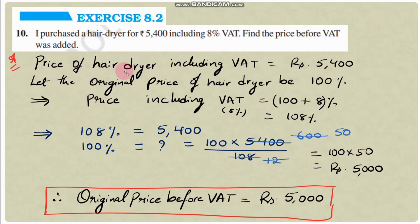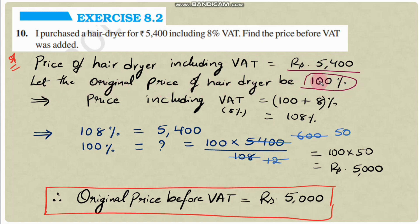Solution: Price of hair dryer including VAT is ₹5400. Let the original price of the hair dryer be 100%. So here the original price of the hair dryer is 100%, and this is before any tax is added.